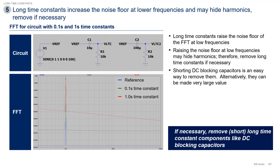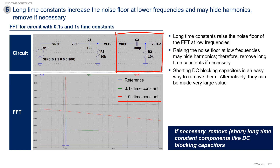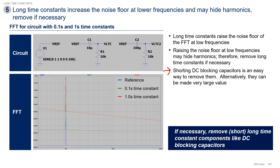The fifth consideration is long time constants, relating to the time constants that set the low-frequency cutoff of the amplifier and raise the low-frequency noise floor of the FFT. High-pass filters raise the noise of the FFT at low frequencies and can potentially hide harmonics. To fix this, you want the associated frequency of these time constants to be well below the FFT frequency resolution. You can achieve this by either shorting the DC blocking capacitors, or making the time constants huge by making the capacitors a gigafarad or so.